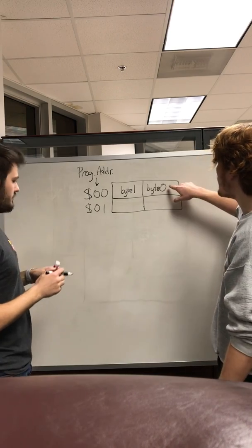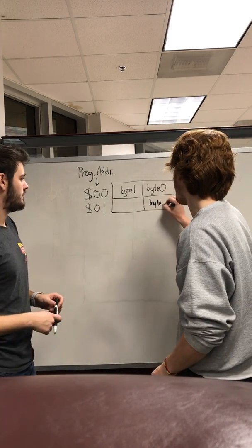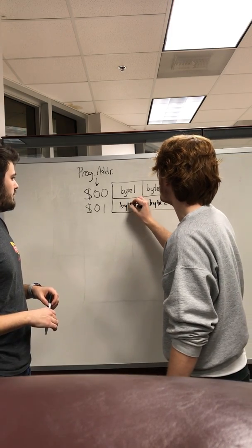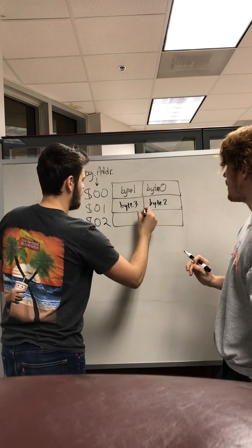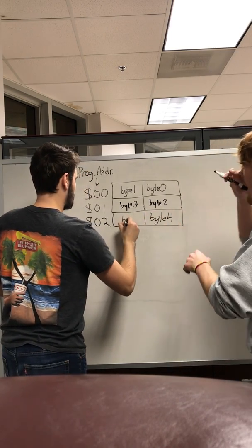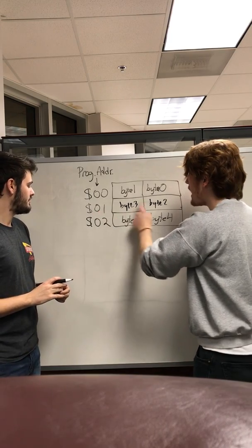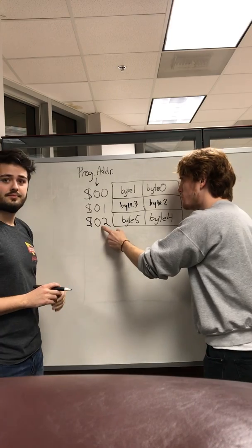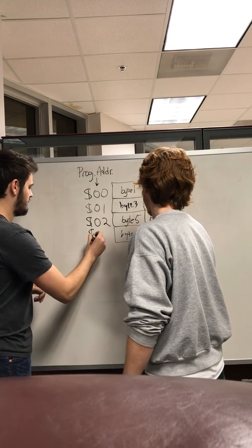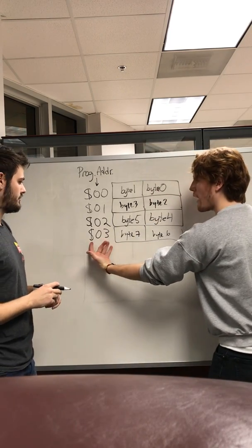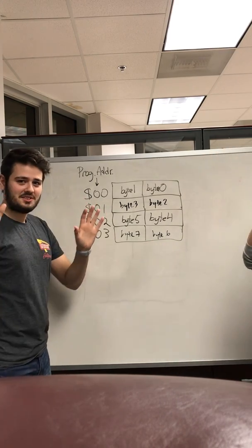At program memory address 0 we have byte 0 and byte 1. At address 1 we have byte 2 and byte 3. At address 2 we have byte 4 and byte 5. At address 3 the first byte we access is byte 6. The pattern: at program memory address 1 the first byte is byte 2, at address 2 it's byte 4, at address 3 it's byte 6.